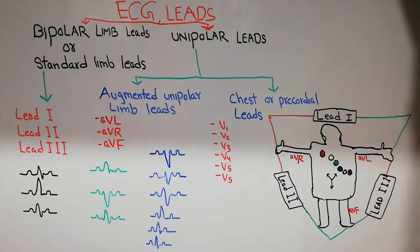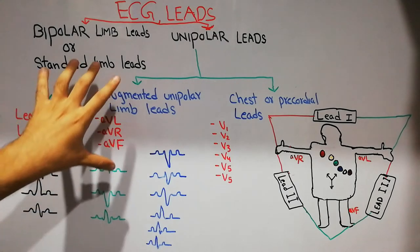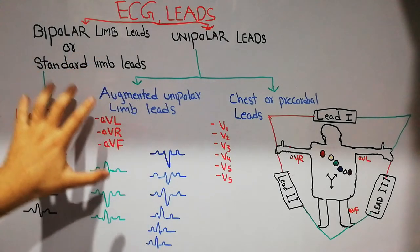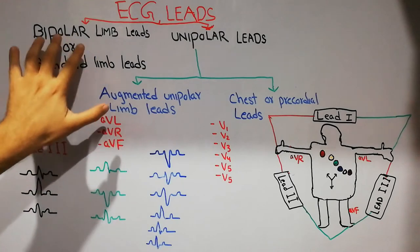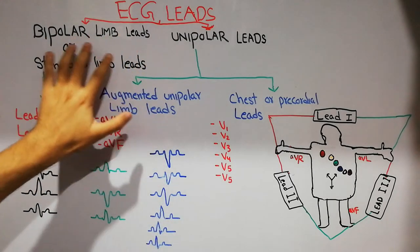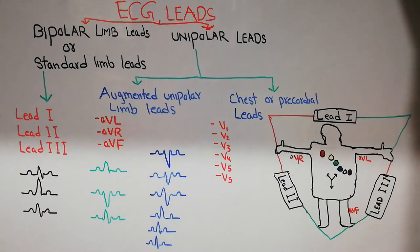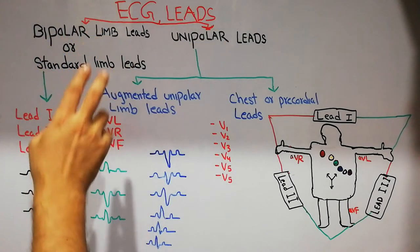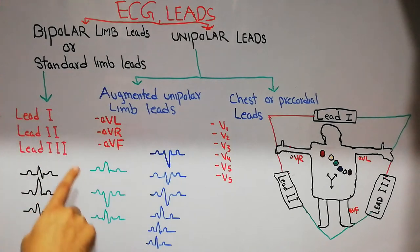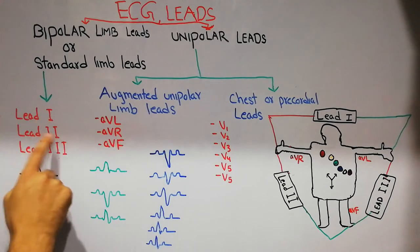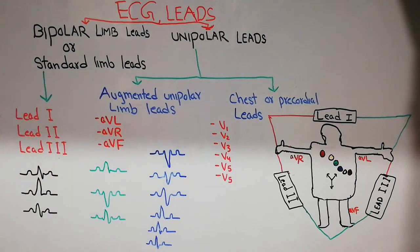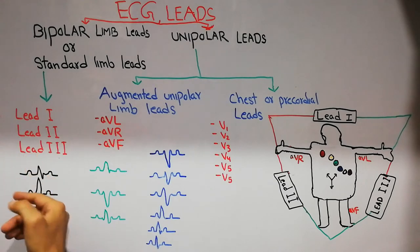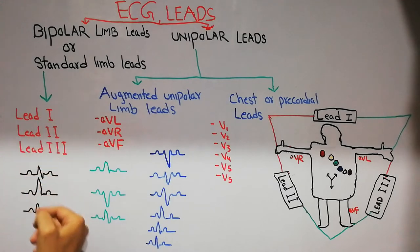In ECG we have 12 leads, and those 12 leads are divided into bipolar limb leads, also called standard limb leads, and unipolar leads. The bipolar limb leads are further classified into Lead 1, Lead 2, and Lead 3, and on the ECG strip they somewhat look like this — these ECG patterns are the patterns of Lead 1, Lead 2, and Lead 3.